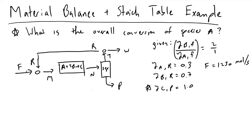We then pass the reactor effluent into a perfect separator, so we get 100% of all the C generated coming out of the product stream. We then take unreacted species A and B, pass them into the recycle stream, and move them back into a mixer to mix with our feed — so we can continue to reuse reactants and get the highest yield possible. Because we have a recycle stream, we will also have a purge stream, denoted W, which is essentially a waste stream.